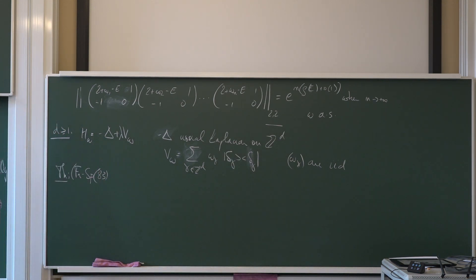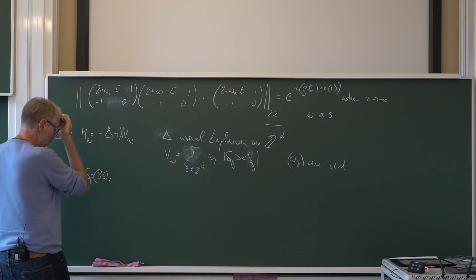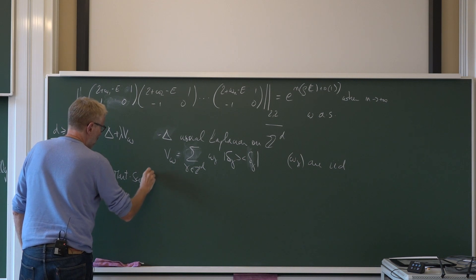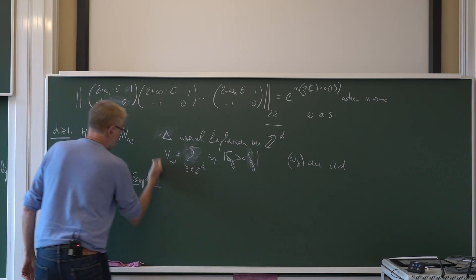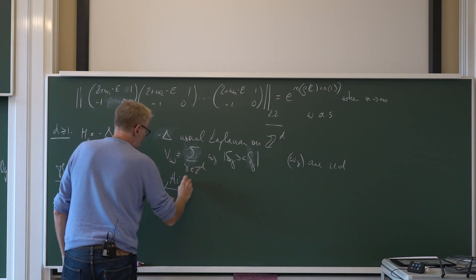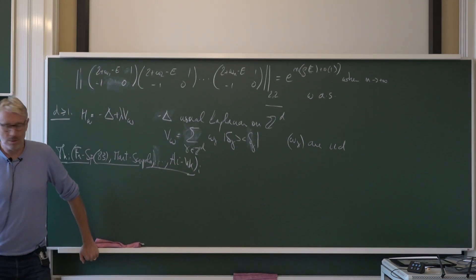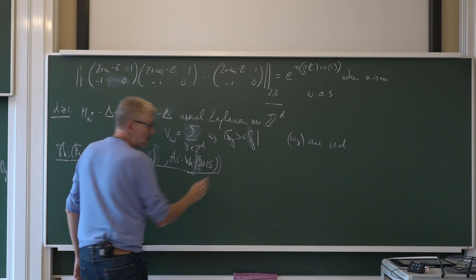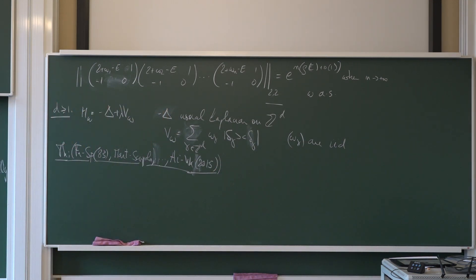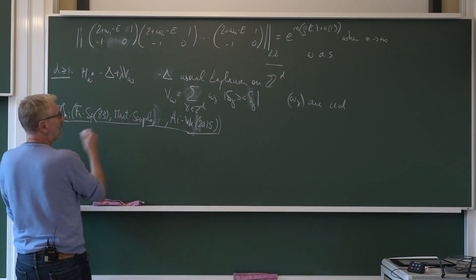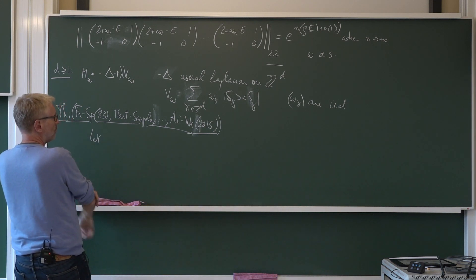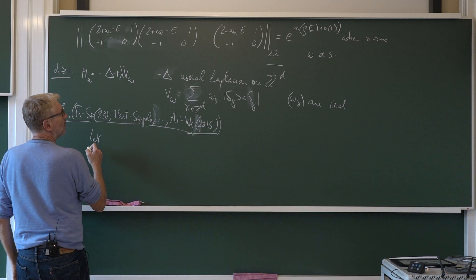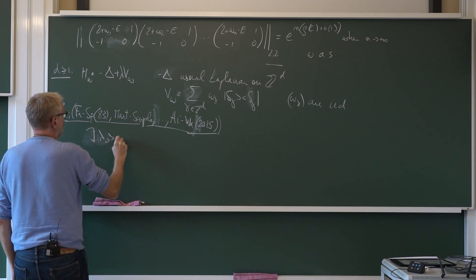The omega_gammas are i.i.d. and usually you scale by lambda positive. The theorem was first proved - essentially the key estimate goes back to Fröhlich-Spencer in 1983, which was essentially the first result in many dimensions. Then Martinelli-Scoppola proved the full result. There is a long list of contributors, and there is a nice 2015 book by Aizenman and Warzel on the topic.